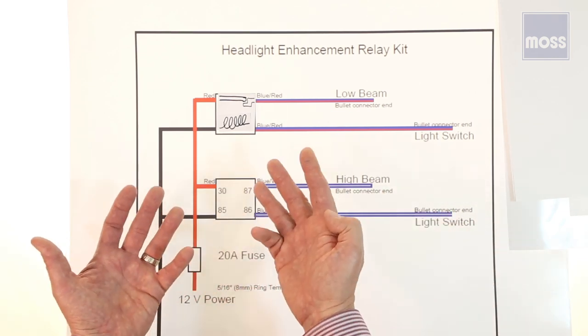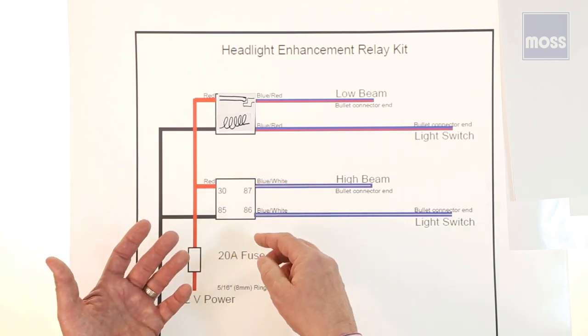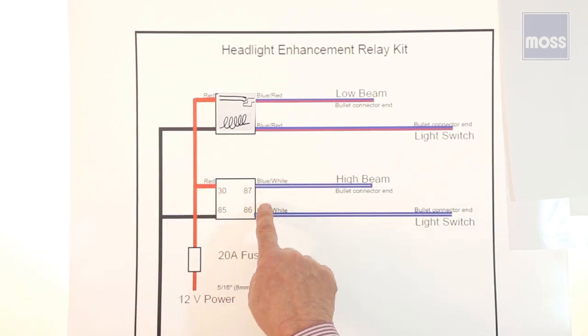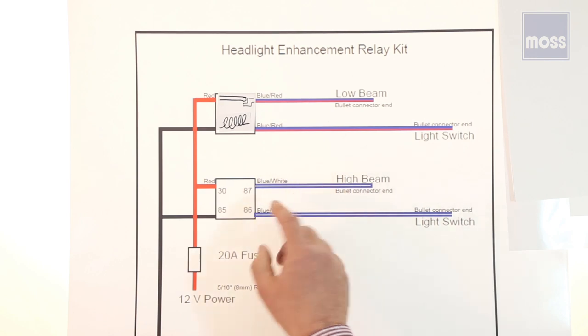I mentioned in the beginning you only need three skills. I said you need to be able to count to four: one wire, two wires, three wires, four. I said you need to be able to read colors: there's red, there's black. We can do that. And I said you need to be able to read in general: there's a 30, 87, 86, 85.